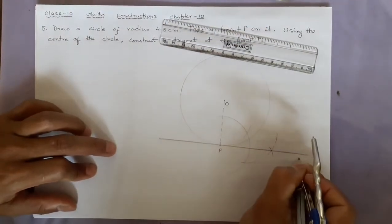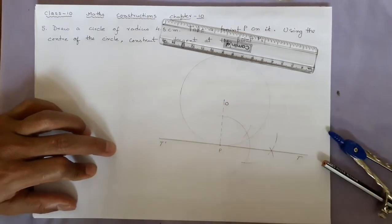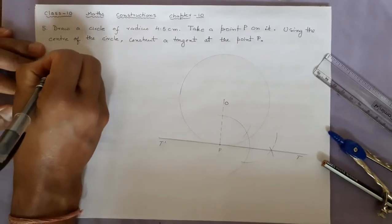This will be your T and T dash. This is all you have to write, so you will write the steps of construction.